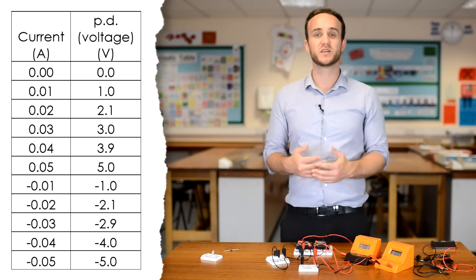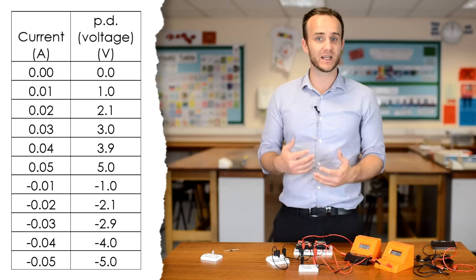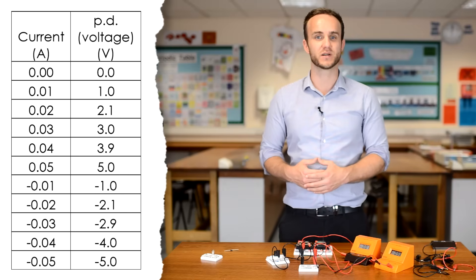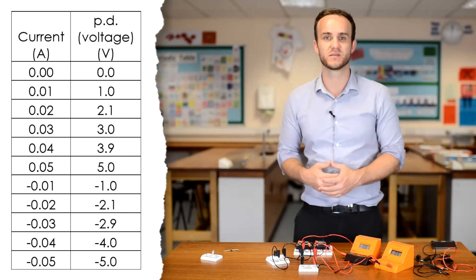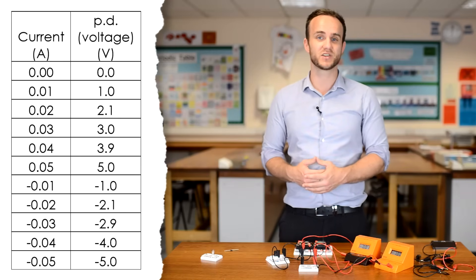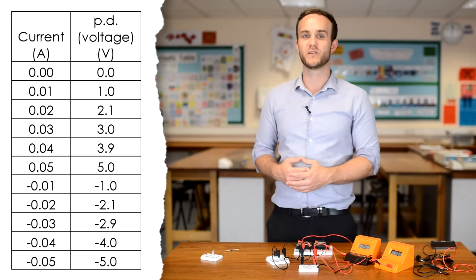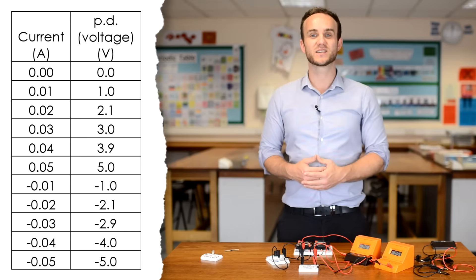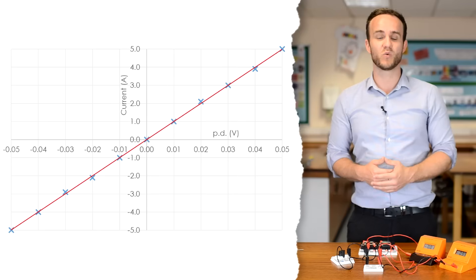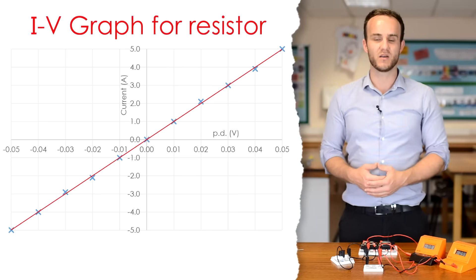What you then need to do is plot a graph. And this is one of those times where the y-axis and the x-axis are going to be in the middle of the graph because you need to be able to plot minus values for both the current and the potential difference. Now, which way do you put them round on the graph? This is a little bit of a point of contention. Some people say that you must have current on the y-axis and voltage or PD on the x-axis. Other people say that it's the other way round. Chances are in your exam you will see current on the y-axis and voltage on the x-axis. That's why it's called an IV graph.